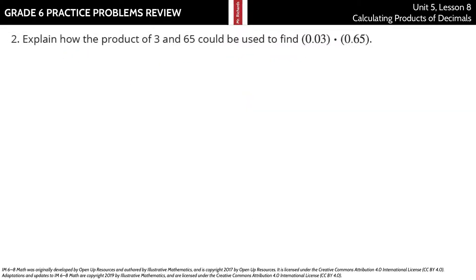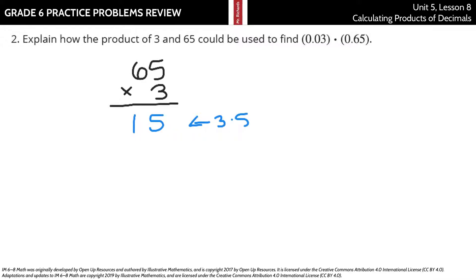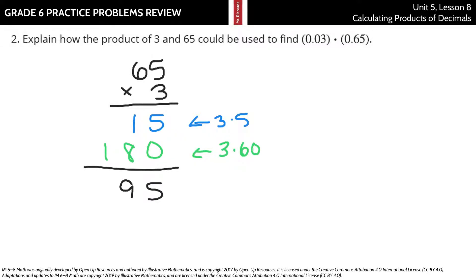Explain how the product of 3 and 65 could be used to find 3 hundredths times 65 hundredths. Let's start off by just multiplying 65 and 3. Well, 3 times 5 is 15, and 3 times 60 is 180. When I add that up, I get 195.